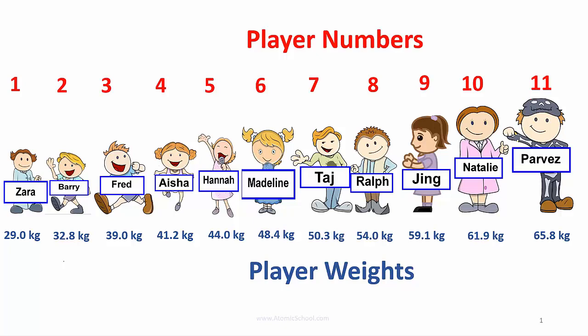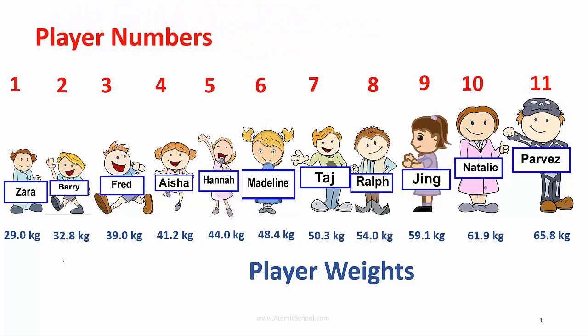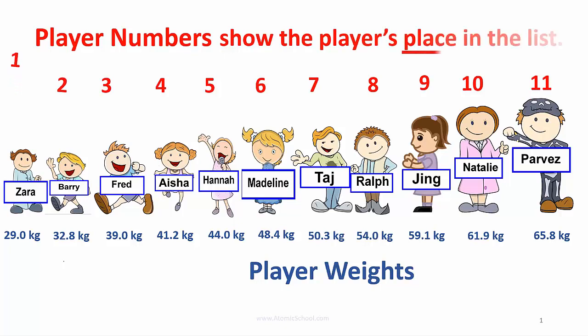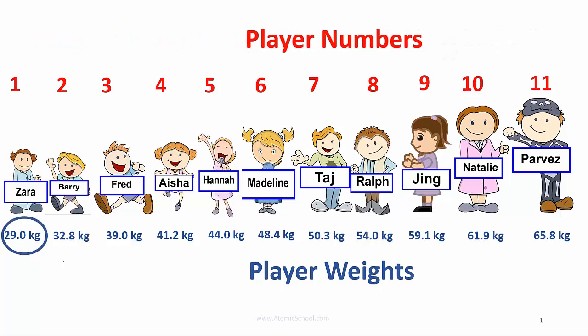In the last video we weighed all the soccer players in a team and lined them up from lightest to heaviest. The player numbers show the player's place in the list and are written at the top. The player weights show their weight in kilograms and are written at the bottom.